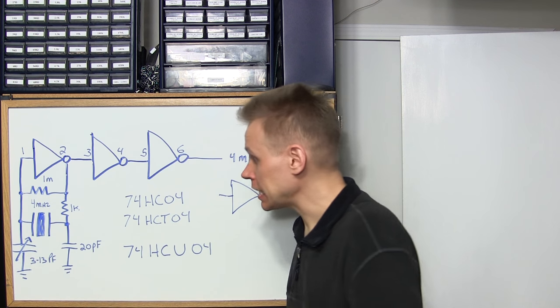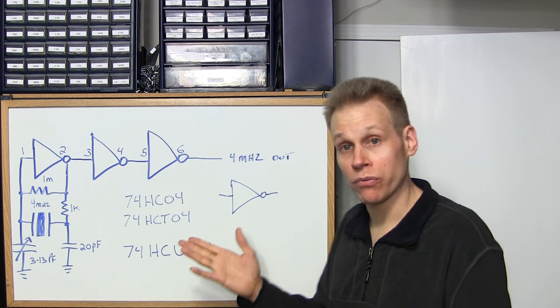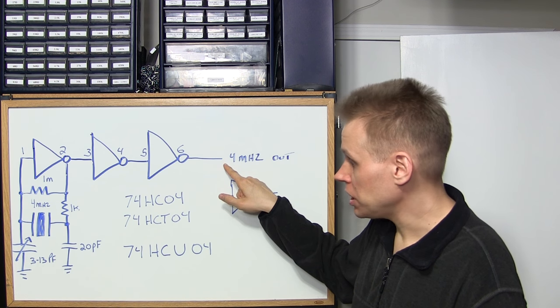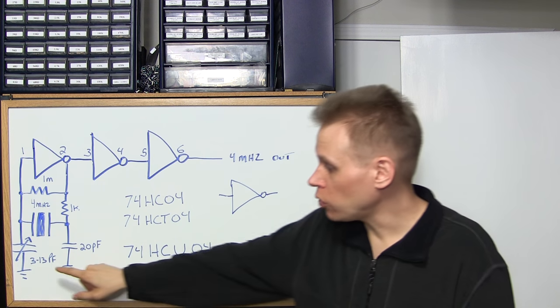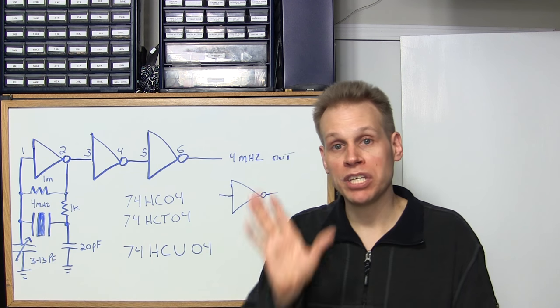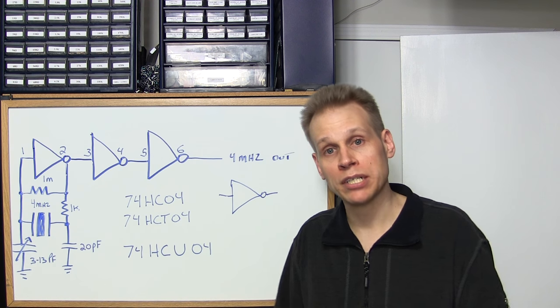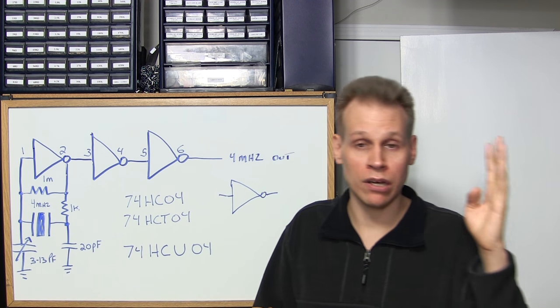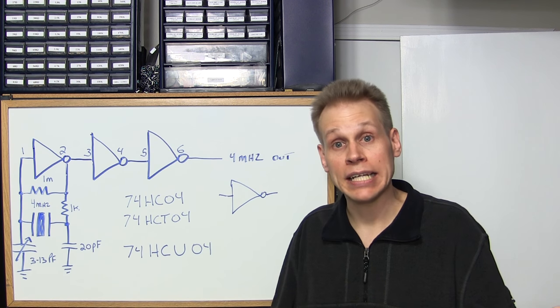We're dealing with an oscillator that's at 4 megahertz so just slight capacitance change will move everything around. When you're building this thing, the whole idea is to have a relatively accurate frequency counter and you want to hook it up to this output. You want this 3 to 13 picofarad capacitor to be centered, so you want it to be right between 3 and 13, not more towards the 13, not more towards the 3.